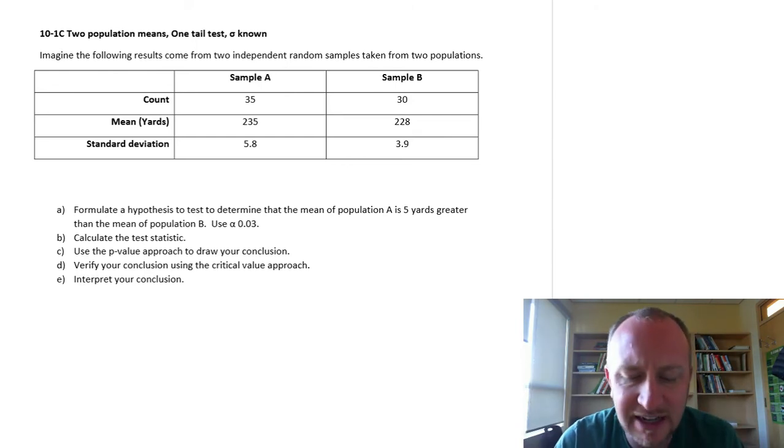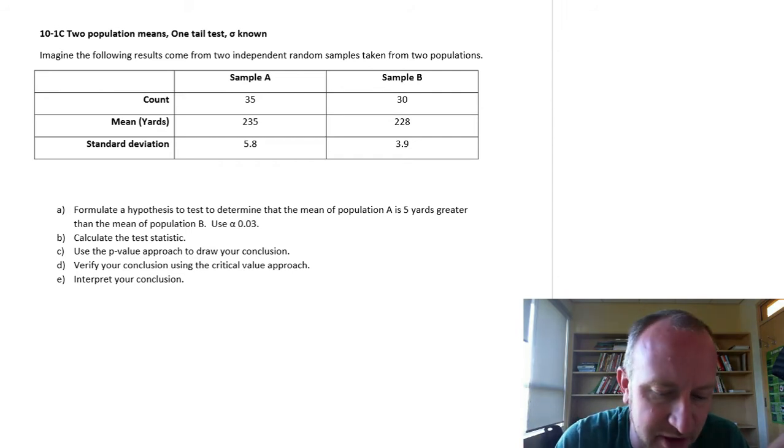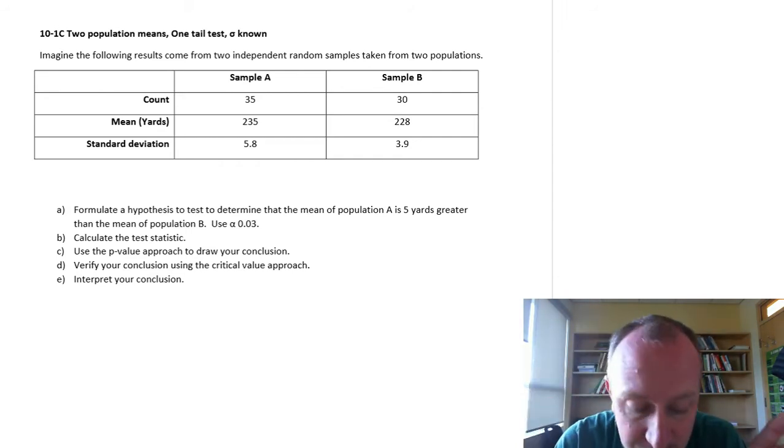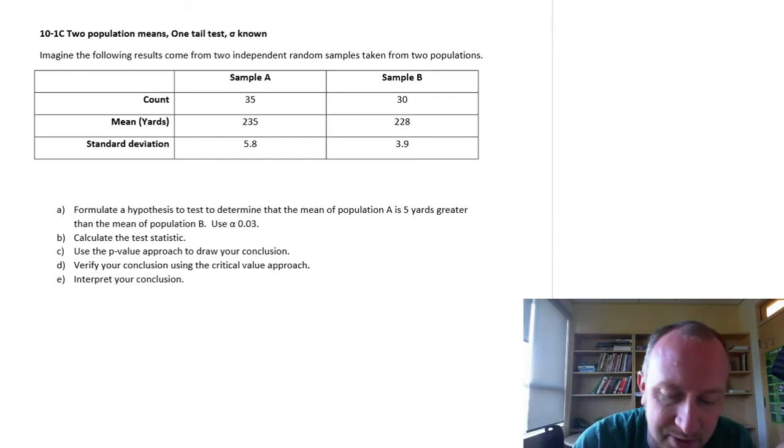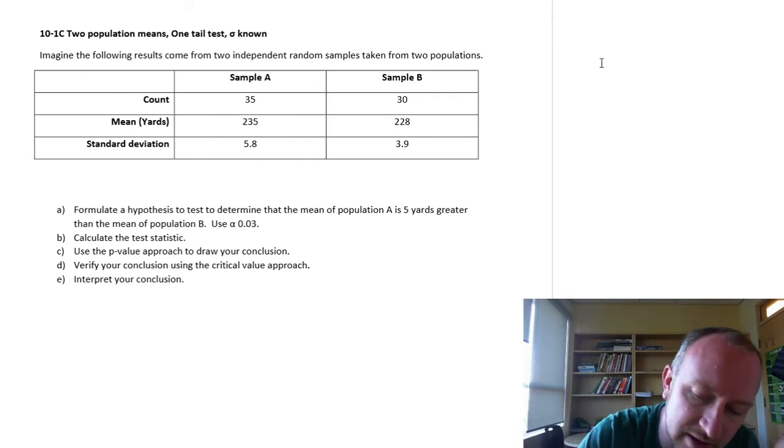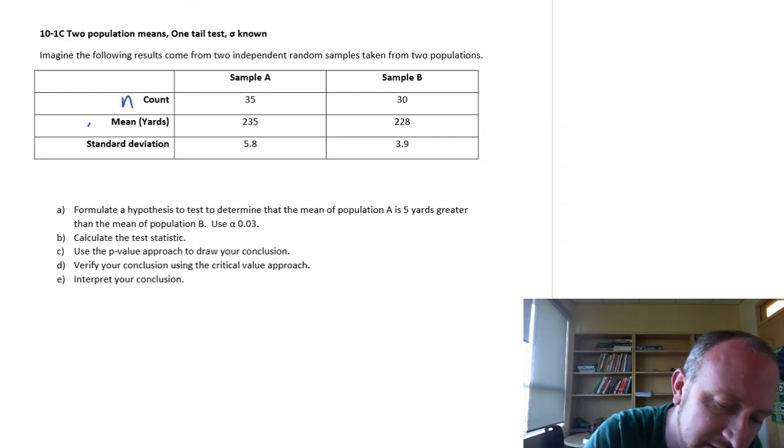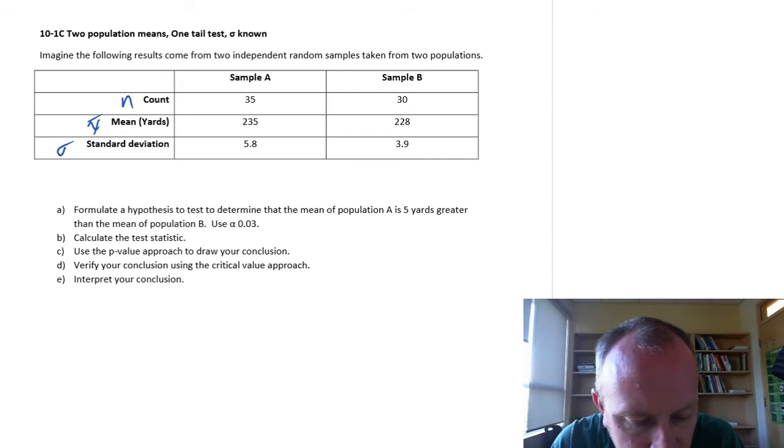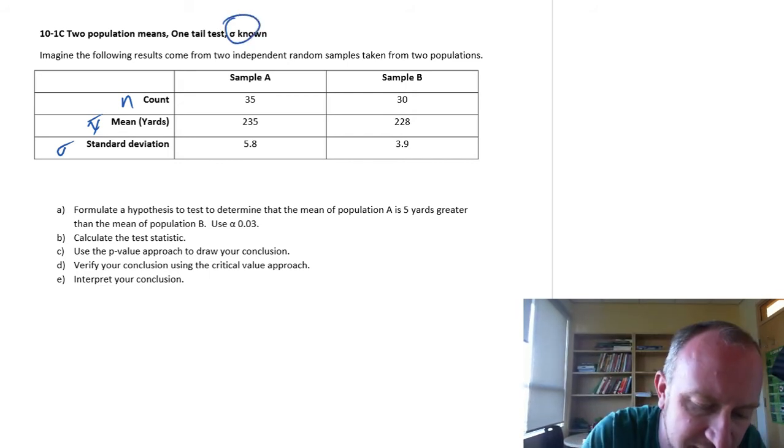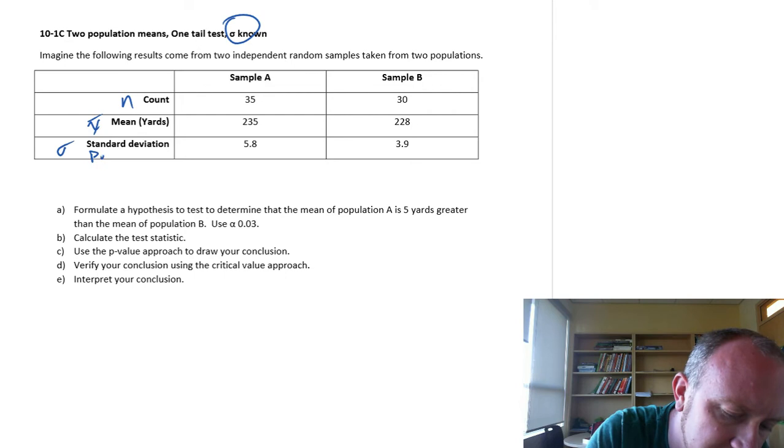So here we have just some generic numbers that we're going to work with. We have the following results come from two independent random samples from two populations. So I have sample A, sample B, with sample sizes, these are x-bars, and these are our sigmas. We're going to assume we know sigma, so that's our population standard deviation.